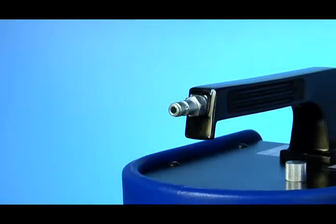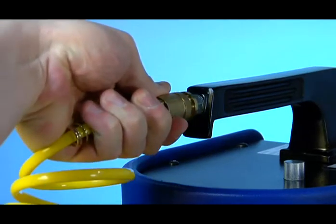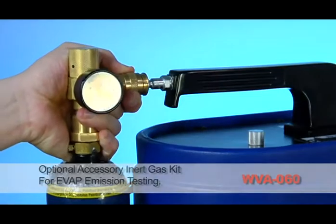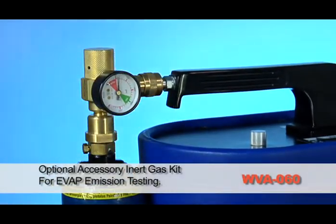Now install the correct air fitting. You can connect your workshop air for general purpose leak testing or you can use nitrogen, CO2, or any other inert gas for safe testing of the evaporative EVAP system.